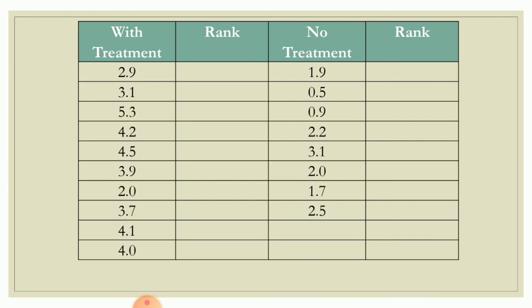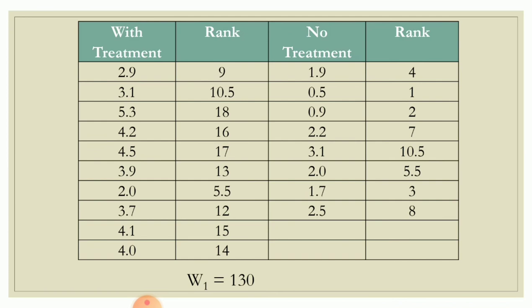Going back to the original data, we have the data with treatment and the data with no treatment, with a column for their corresponding ranks. So 2.9 is rank 9, 3.1 is rank 10.5, 5.3 is rank 18, and so on. Then get the sum of ranks for group 1, which is W sub 1, equal to 130. Doing the same for the no-treatment group, the sum of ranks W sub 2 is equal to 41.